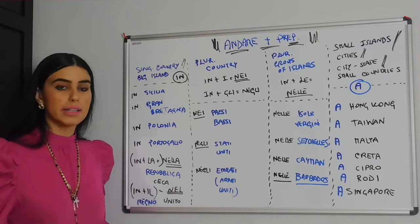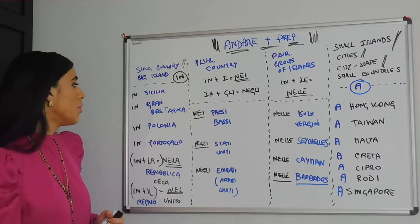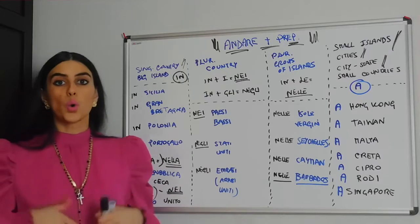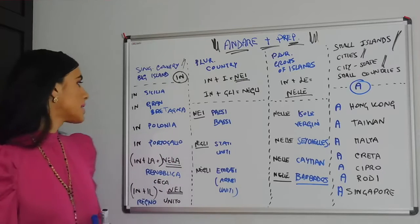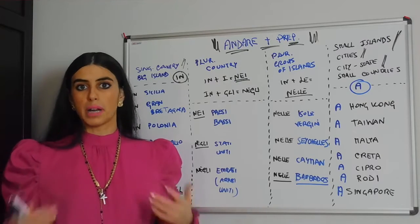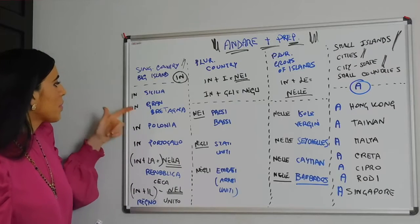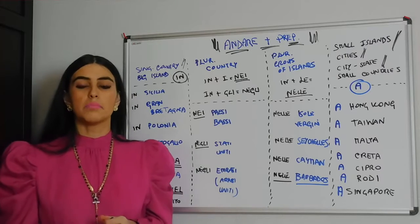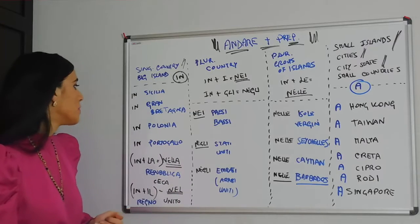And I could carry on: in Germania (Germany), in Spagna (Spain), in Russia, in Ucraina. I could say in Canada, in Venezuela, in Argentina, in Brasile — and so on. For big islands, we have Gran Bretagna and Sicilia. I could also say in Jamaica, and so on and so forth.